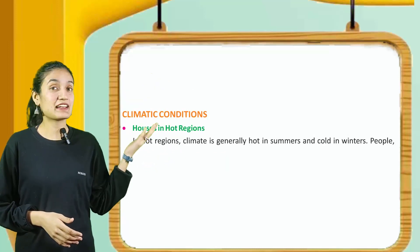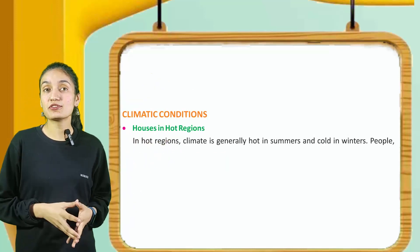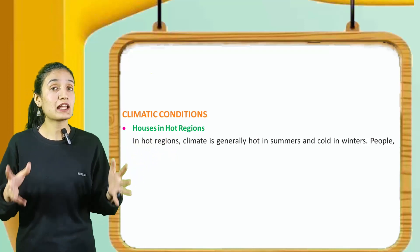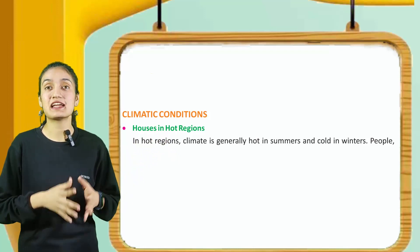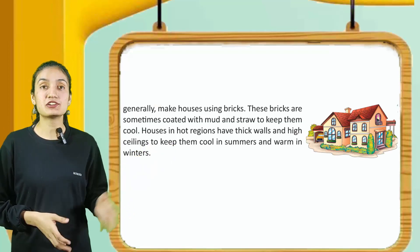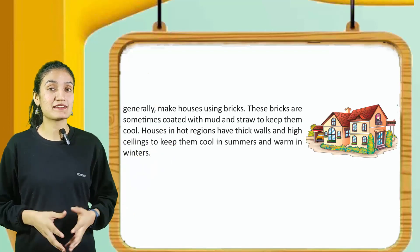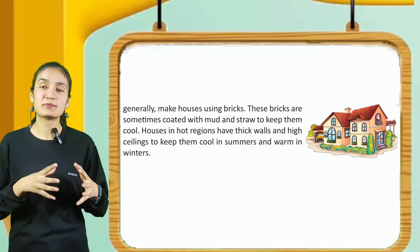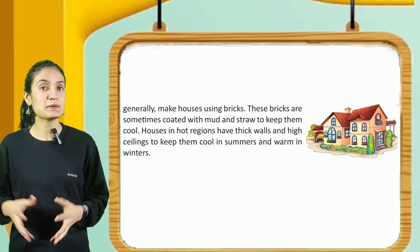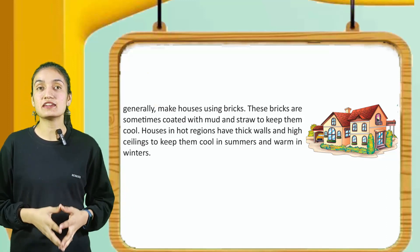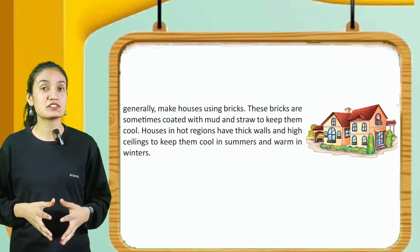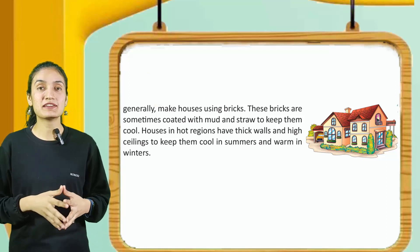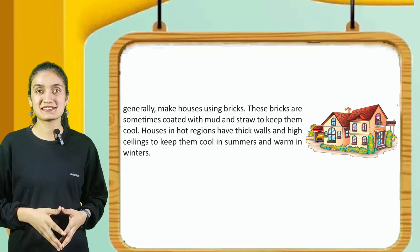Now let's see the climatic conditions. Houses in hot regions: in hot regions, climate is generally hot in summers and cold in winters. People generally make houses using bricks. These bricks are sometimes coated with mud and straw to keep them cool. Houses in hot regions have thick walls and high ceilings to keep them cool in summers and warm in winters.